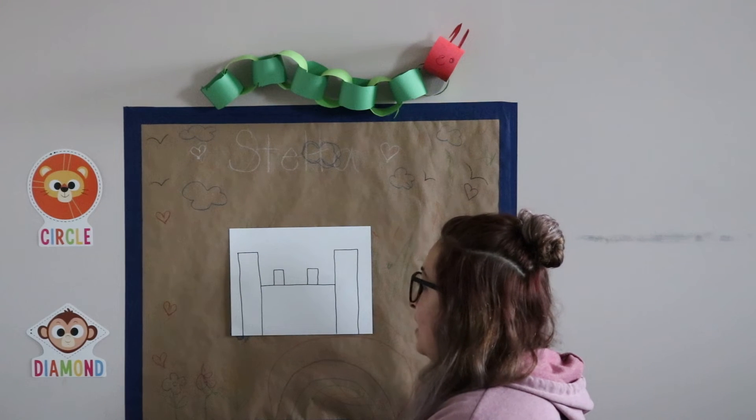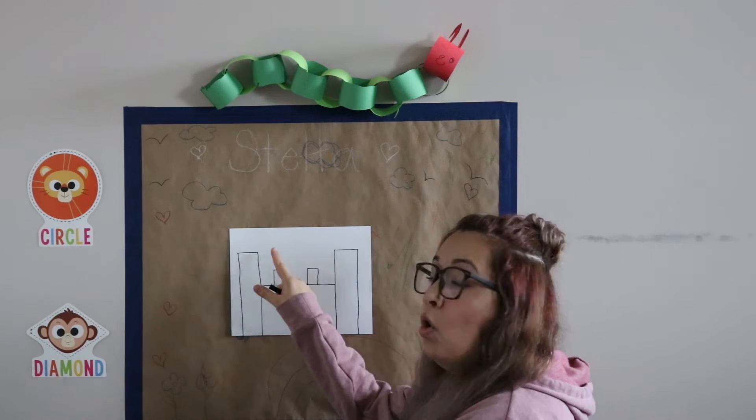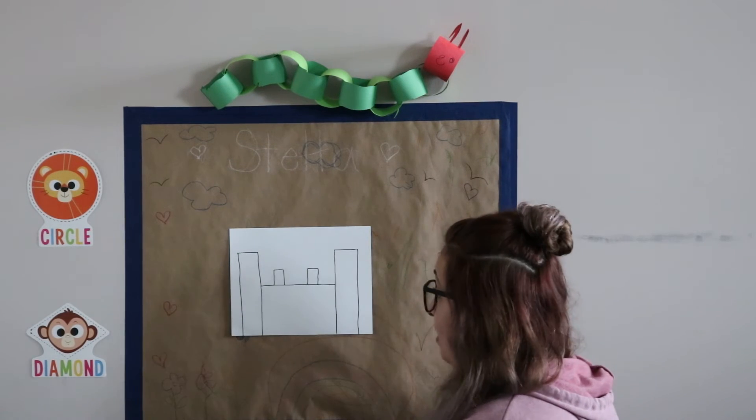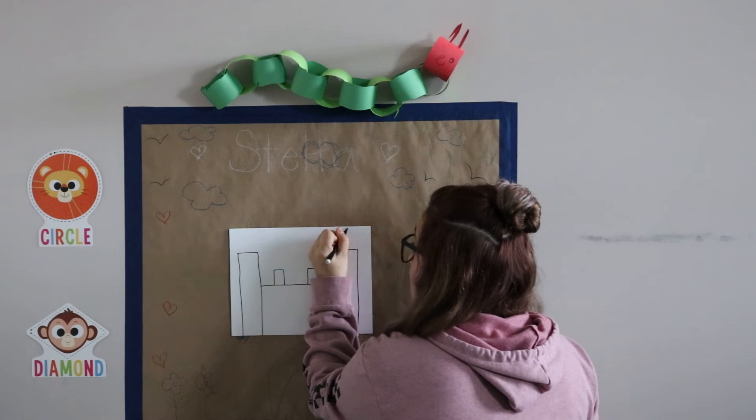Okay, perfect. And next we are going to draw four triangles on top of each one of our big rectangles.